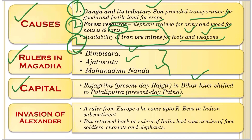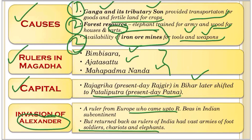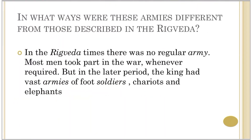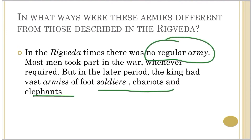An important point is that Alexander, a ruler from Europe, came up to the river Beas in the Indian subcontinent. His invasion happened around this period when Magadha was the dominant kingdom. He returned because the rulers of India had vast armies of soldiers, chariots, and elephants. This shows how powerful Magadha had become - unlike in the Rigveda period, there was now a large regular army of soldiers, chariots, and elephants.